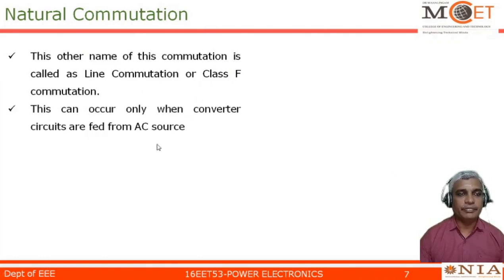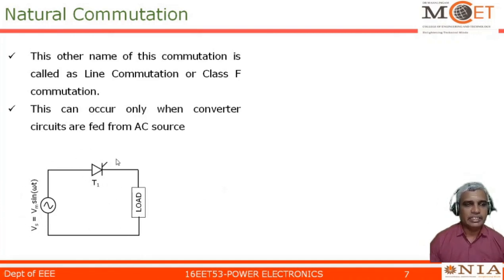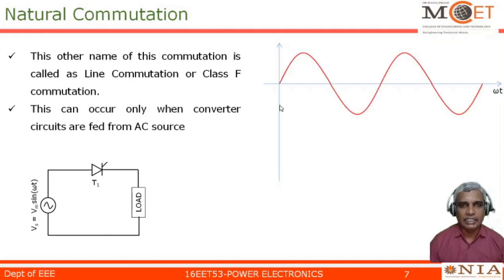Natural commutation occurs only when the converter is fed from an AC source — only when the input is AC can we use this natural commutation. The circuit shown is a normal half-wave controlled rectifier circuit, very similar to the half-wave rectifier circuit where the diode is replaced with a thyristor. The input is considered as Vm sin(ωt), where Vm is the peak voltage of the input supply and ω is the angular frequency.